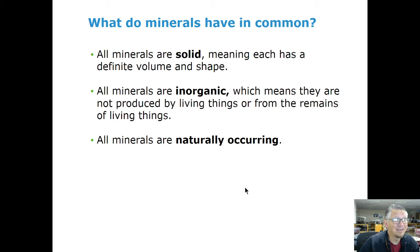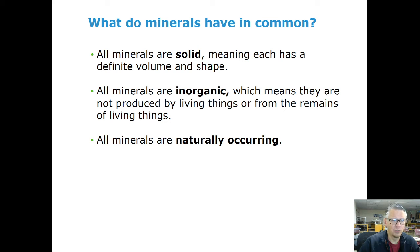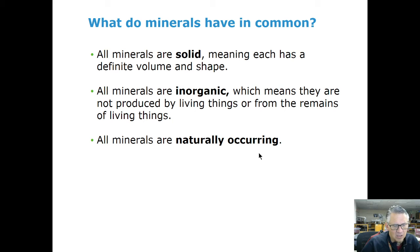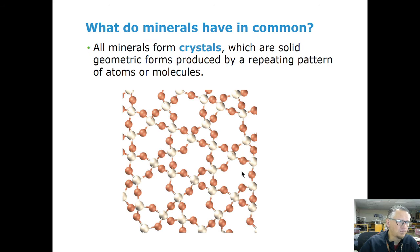Minerals have to be solid — that means they have to have a shape. They're not going to be something that has melted or is in liquid form. They have to be inorganic. Coal is a weird one: coal is a rock, but it's not a mineral because coal is organic. And they have to be naturally occurring. Right now, there are a lot of gemstones being made in a laboratory, so they would not be considered a mineral. All minerals have a crystalline structure with a repeating pattern.